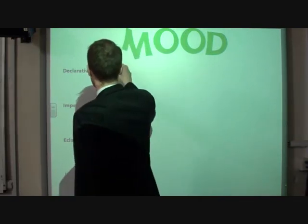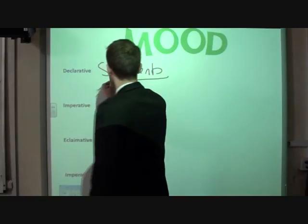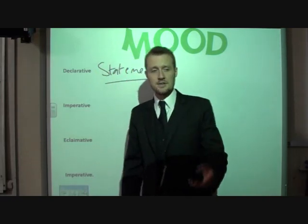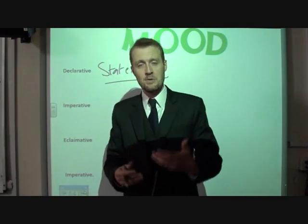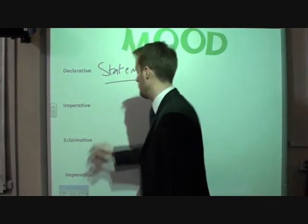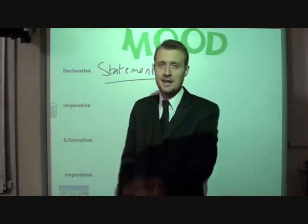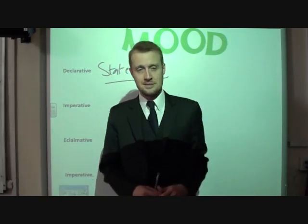Declarative sentences are basically statements — telling it like it is. The sky is blue. The sun is bright. This room is dark. They're just simple statements that tell you what's happening. And the majority of your sentences will be declarative. Go and look at the last piece of English writing that you did and you'll see that the majority of your sentences are simply statements.